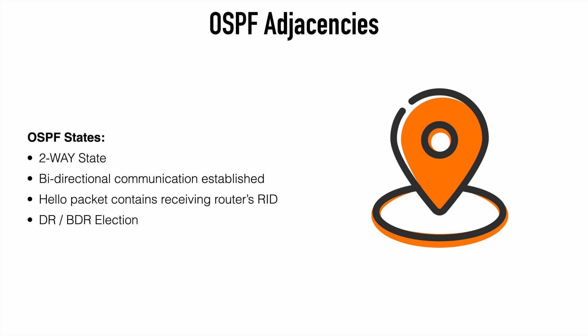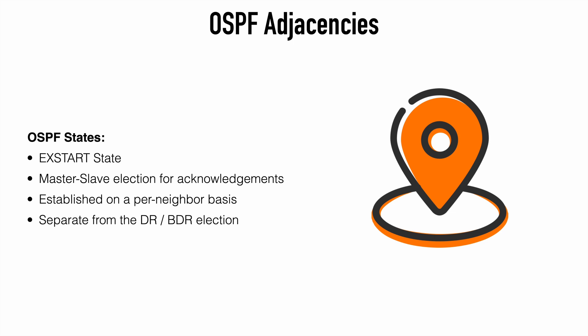At this point, the DR and BDR election also takes place — the designated router and the backup designated router. Once these are elected, we move to the ExStart state. This is where OSPF routers establish a master-slave relationship where the router with the highest router ID will become the master device. This is established on a per-neighbor basis, and this relationship has nothing to do with the DR and BDR election. It's a completely separate process serving a completely separate purpose — it's entirely possible that the BDR could play the role of the master.